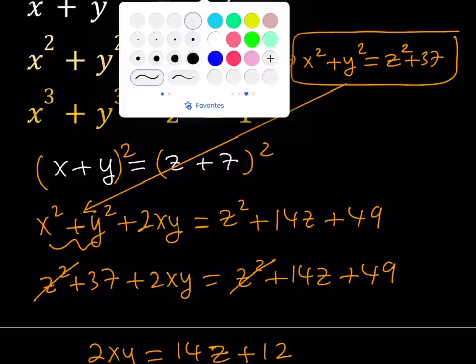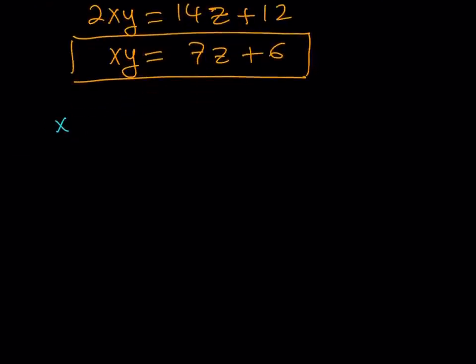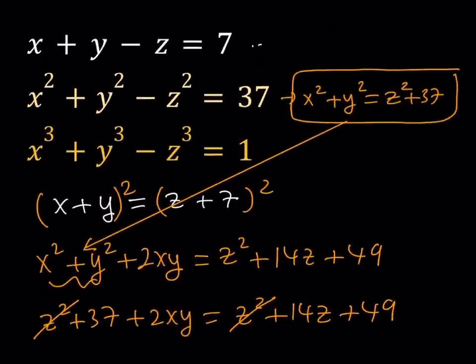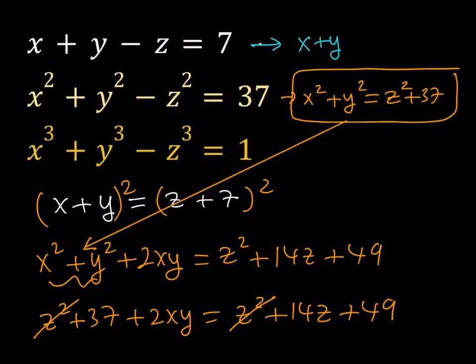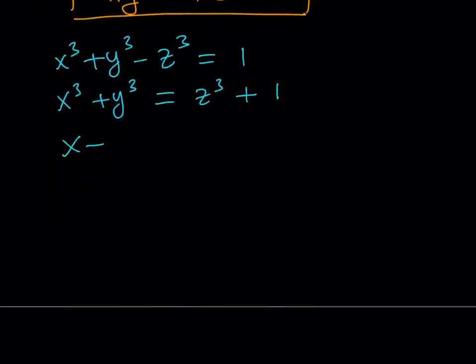What does the third equation give us? We have x cubed plus y cubed minus z cubed equals 1. I'd like to isolate, like before, the sum of x cubed plus y cubed. And that is going to become z cubed plus 1. Now, I have x plus y in terms of z right here. x plus y is equal to z plus 7. So, I kind of have like a system of equations. There are three variables, but